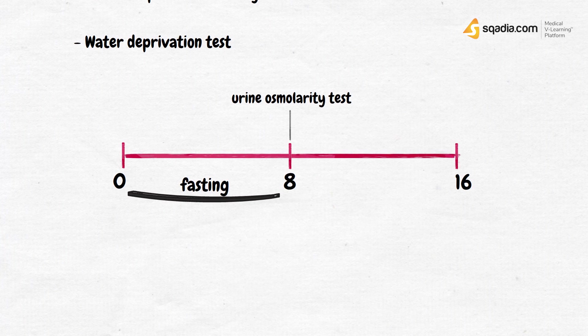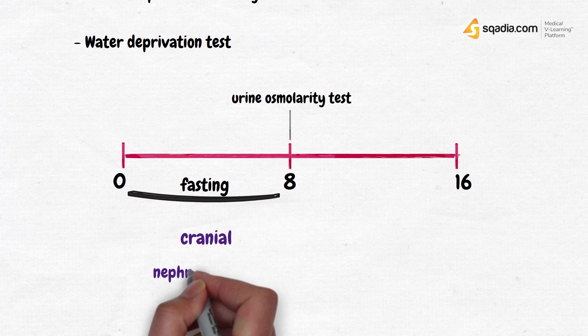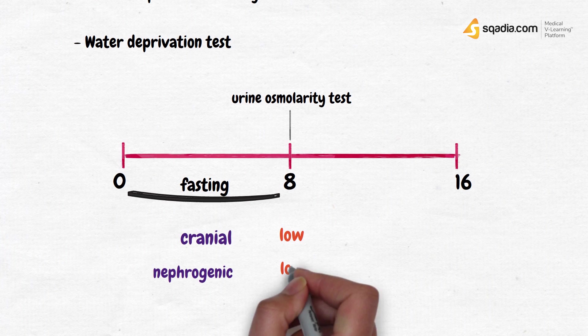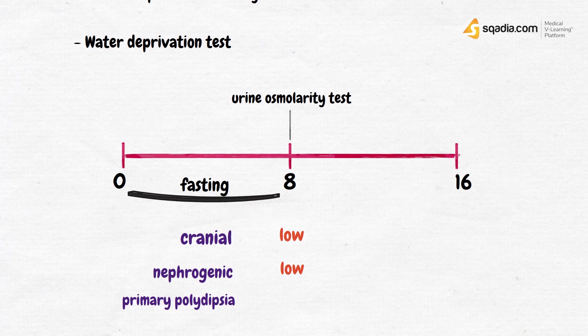In both cranial and nephrogenic diabetes insipidus, due to sodium retention, urine osmolality would be low. In the case of our main differential primary polydipsia, where nothing's wrong with ADH, the urine osmolality would be high, because ADH is doing its job by concentrating the urine by reabsorbing water from it. So we can use this test to rule out primary polydipsia here.